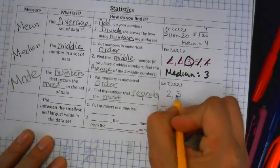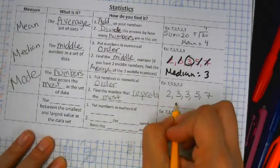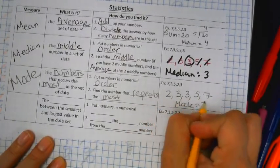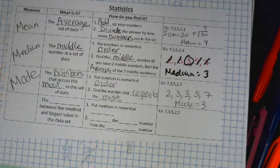Let's put them in order. Two, three, three, five, seven. So what is the mode? Three.